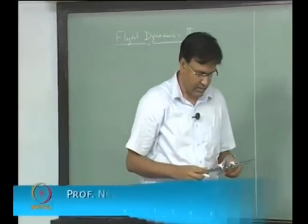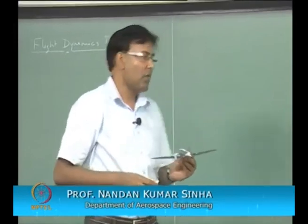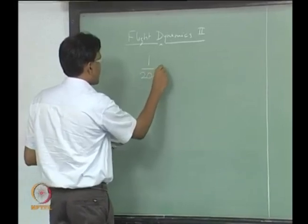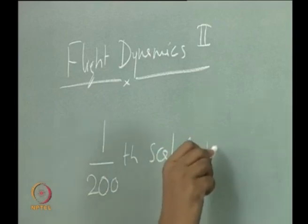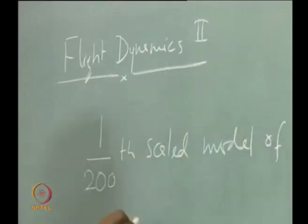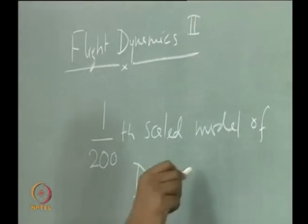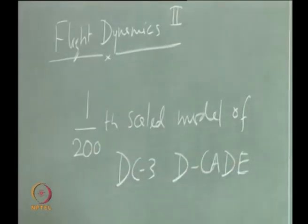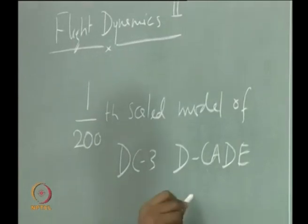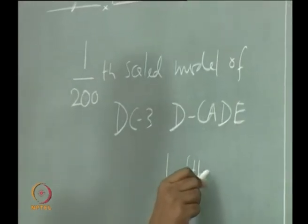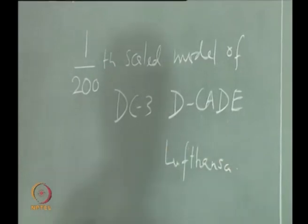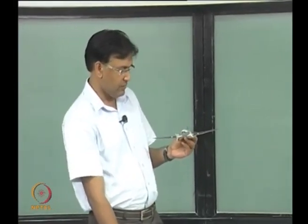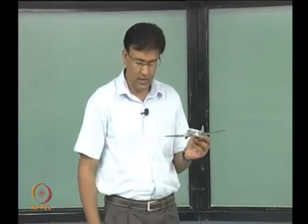Let us try to recollect what we did yesterday through this model. This is a 1 over 200 scaled model of this aircraft whose name is Decade, operated by Lufthansa. This is just one of the aircraft models and let us try to understand the nomenclature that we discussed yesterday.